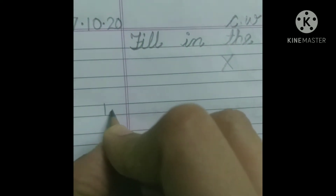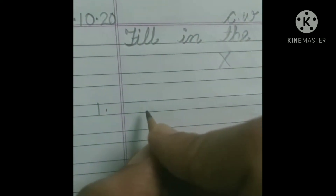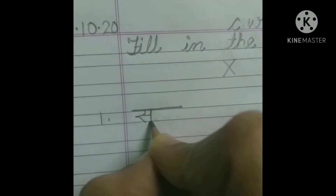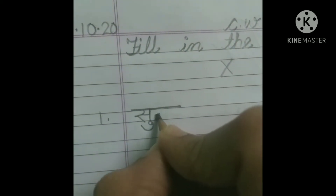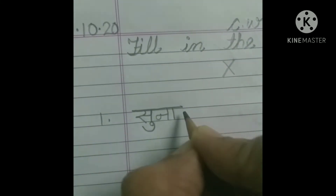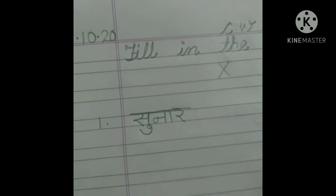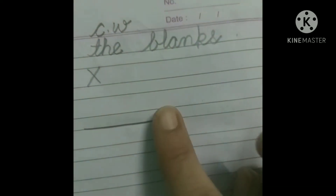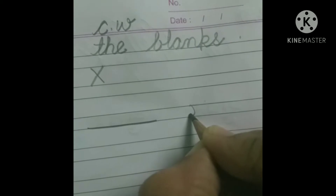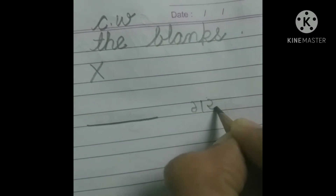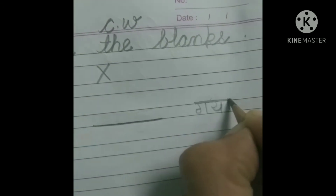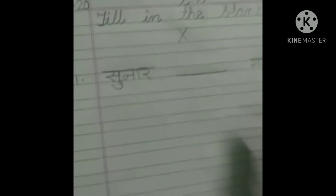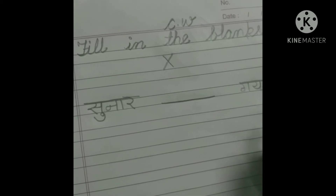Put number 1. First filling the blanks. Write 'Sa' — Sa pe Chhoti U ki matra: Su. Write 'Na' — Na pe aa ki matra: ra. So 'Sunaar'. Take one finger gap and make a blank here. Then take one finger gap and write 'Ga', 'Ya' — Ya pe aa ki matra: Gaya. Poor viraam. Sunaar dash gaya. Sunaar kahan gaya? Sunaar dukaan gaya.